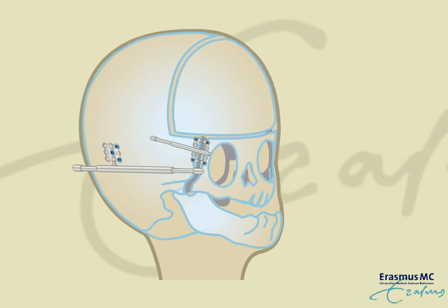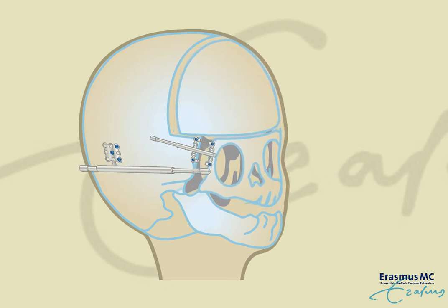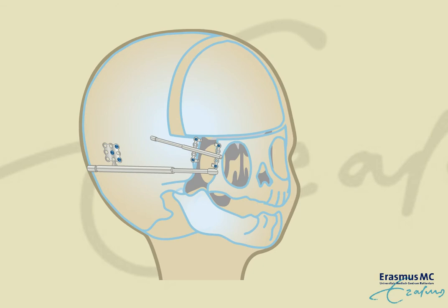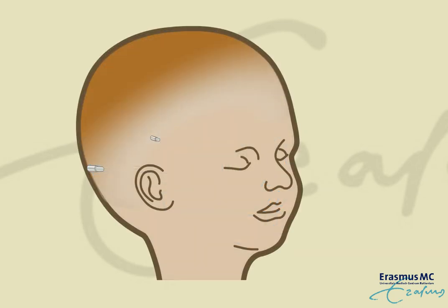Activation of the distractors pushes the facial skeleton forward. The advancement is one millimeter a day until the desired correction is achieved. The distractors are covered for the largest part by the skin. Only the end of the distractors protrudes through the skin and this part can be activated with a special screwdriver.